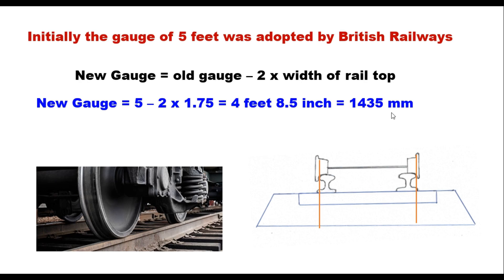And this is the standard gauge in most countries even today. In fact, 62 percent of the world's railway is laid on this standard gauge. Countries like UK, USA, Canada, and China all have the standard gauge of 1435 millimeters.